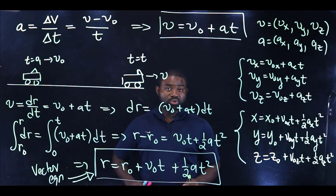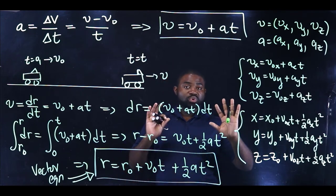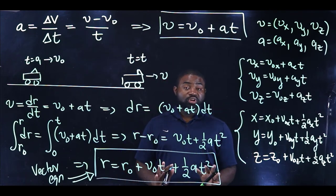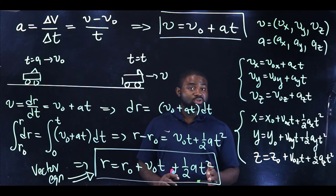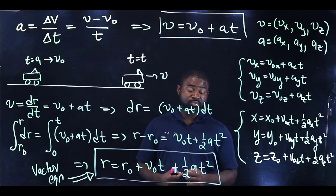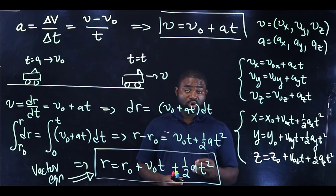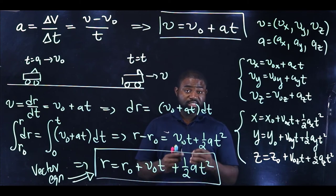The most important thing to note is that the motion of the system along the x direction is totally independent of the motion along the y direction, as well as totally independent of the motion along the z direction. We call this in physics the law of physical independence.